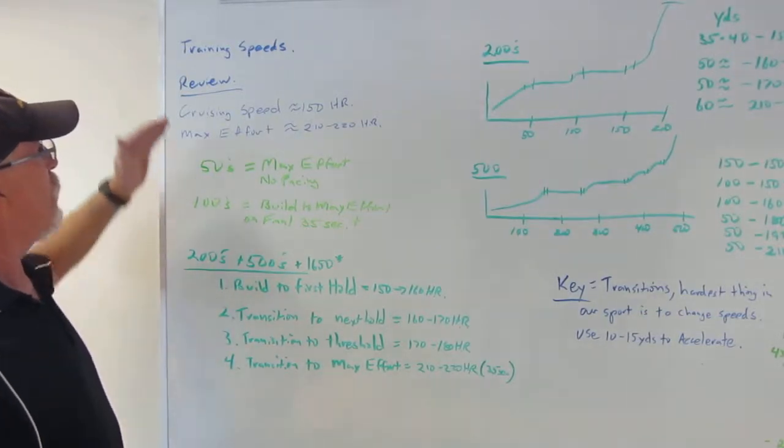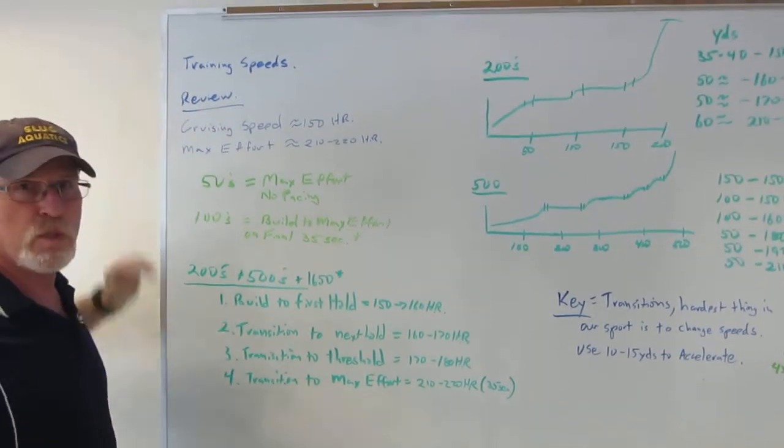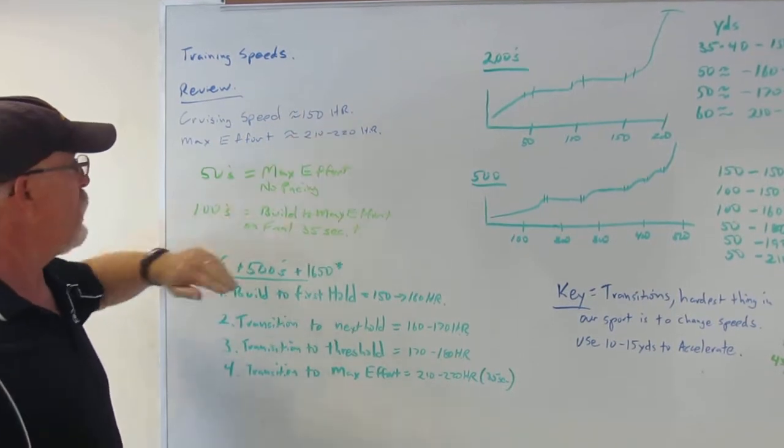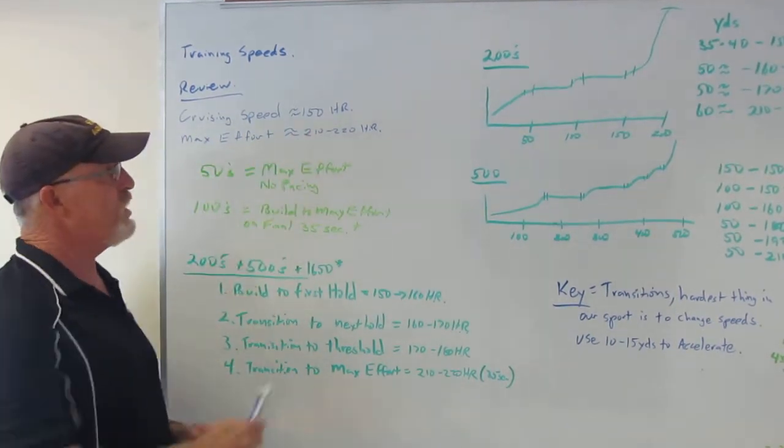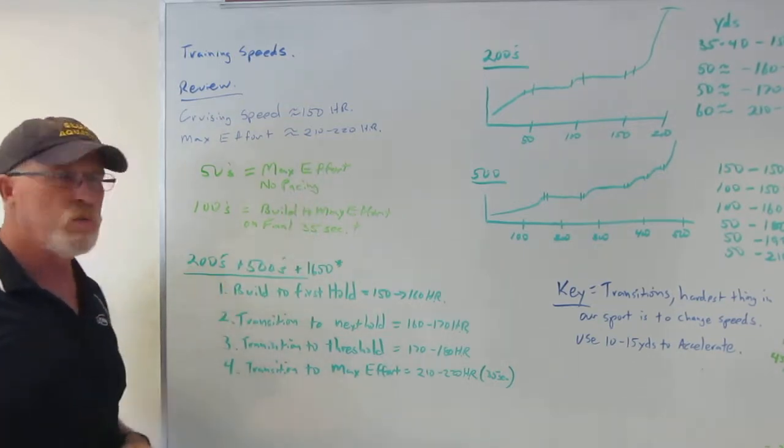A quick review - we've talked a lot already about cruising speed, which is about 150 heart rate. We've talked about max effort, which when you're going max effort is 210 to 220 heart rate.